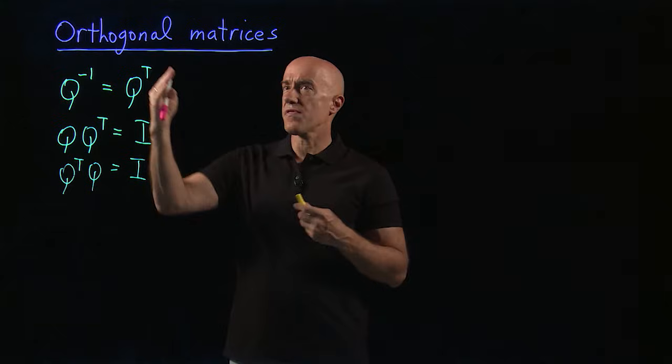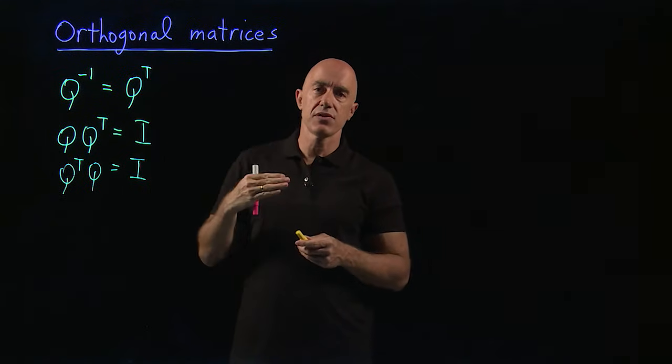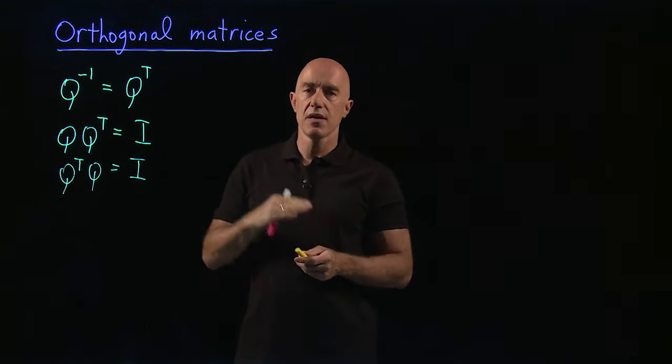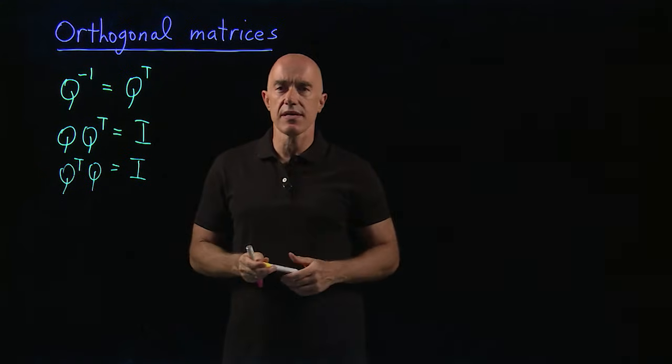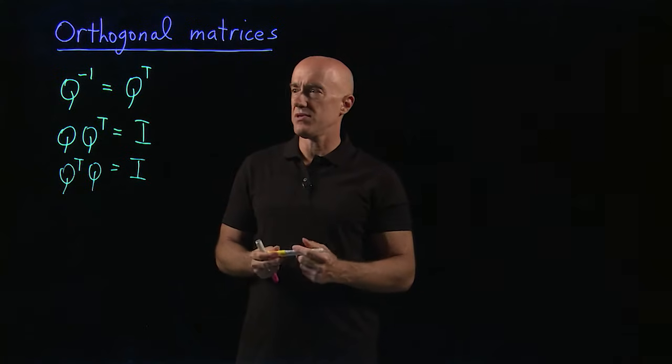So an orthogonal matrix is special in that both its rows are orthonormal and its columns are orthonormal. There's one other thing that's special about orthogonal matrices.